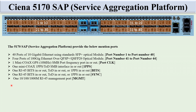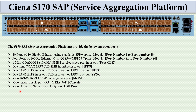There is one 10/100/1000M RJ45 management port — this is the MGMT port. One serial console port with RJ45 or EIA561 interface — this is the console port. There is also one Universal Serial Bus USB port located between the management and console ports.